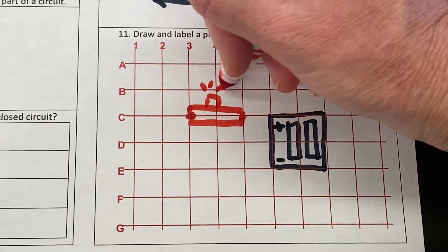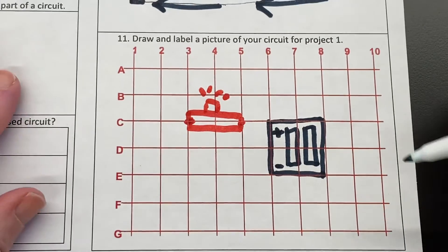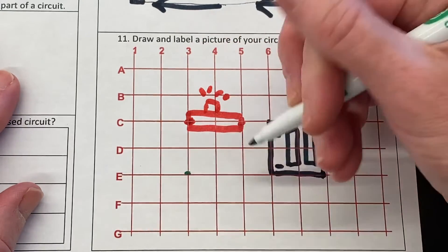Now I'm going to use green to draw the switch. The switch goes from e3 to e5.